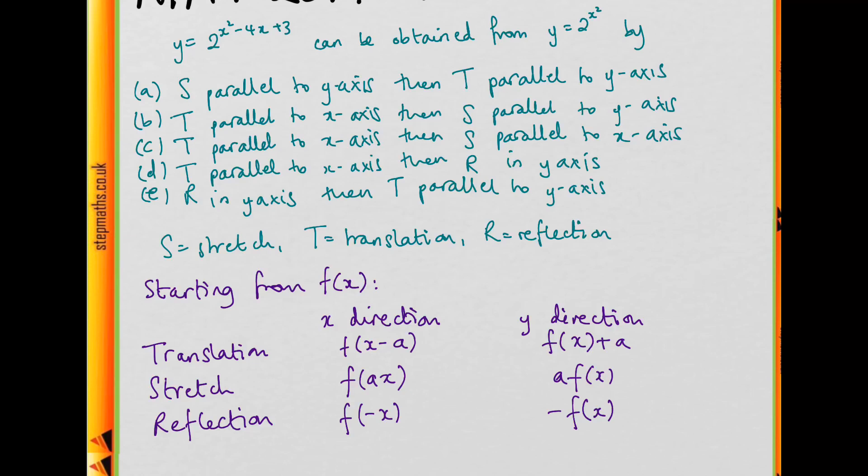It might have been tempting to say that this is just this graph, but then I'm going to translate x by minus 4x plus 3. Well, that doesn't really work, because here we can only do these transformations where a is a real number, and x here is a variable.